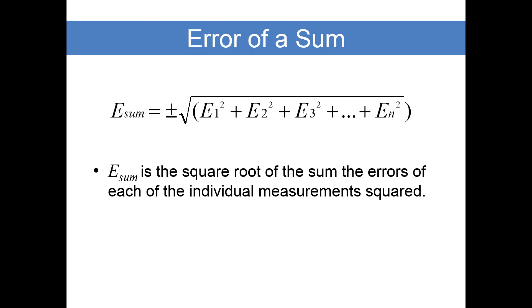Now the second one we want to talk about is the error of a sum. Simply put, the square root of the sum of the errors of each of the individual measurements squared.